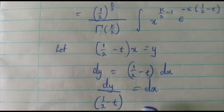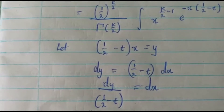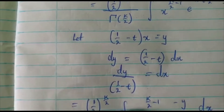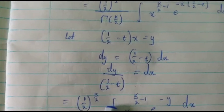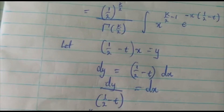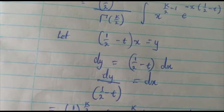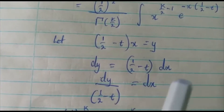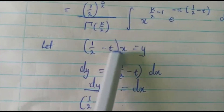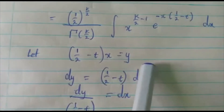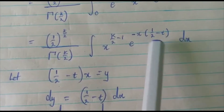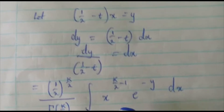We make x the subject of the formula: x equals y over (half minus t). From here we are going to replace the whole power of e with y, so the exponential becomes e to the power negative y.